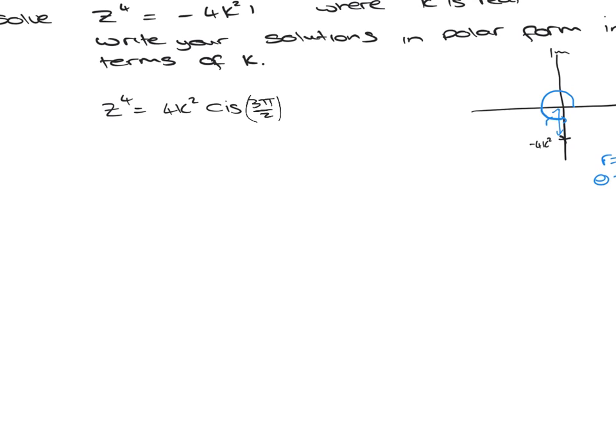Now our first solution comes from taking the 4th root of 4k squared, so that's 4k squared to the quarter, and you divide by the power, so that becomes 3 pi by 8. 3 pi by 2 divided by 4 becomes 3 pi by 8.